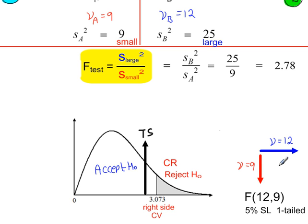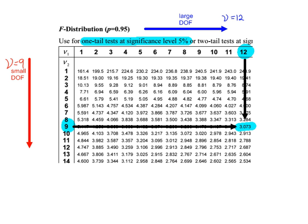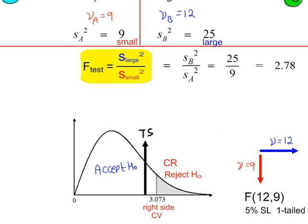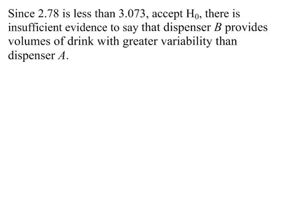In the F distribution tables, we look up degrees of freedom for the large sample variance first. That gives 12 along the top, and for the small variance, degrees of freedom is 9, which goes down the side — written as F(12, 9). The first value is along the top, the second value down the side. From the tables, our right-side critical value is 3.073. Our test statistic 2.78 is less than 3.073, so we accept H0, and state the conclusion in context.